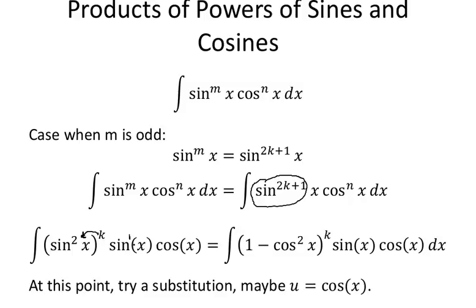The idea is that you take the sine squared and replace it with 1 minus cosine squared to the k power. At this point, try an integration by substitution: u equals cosine of x. This is going to be u, the cosine squared becomes u squared, and there's a du — very interesting.